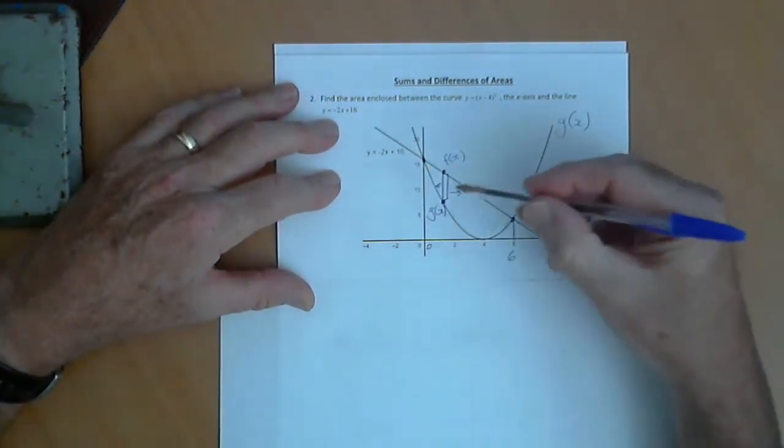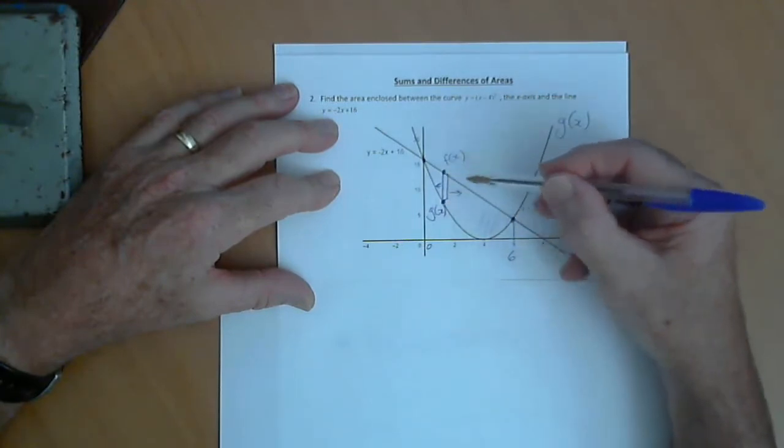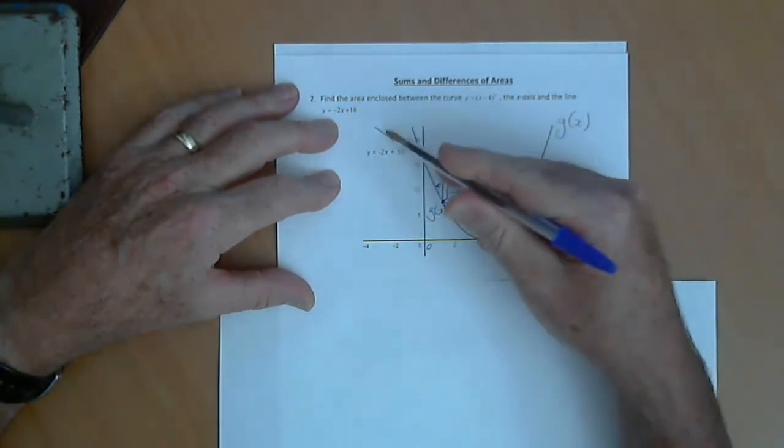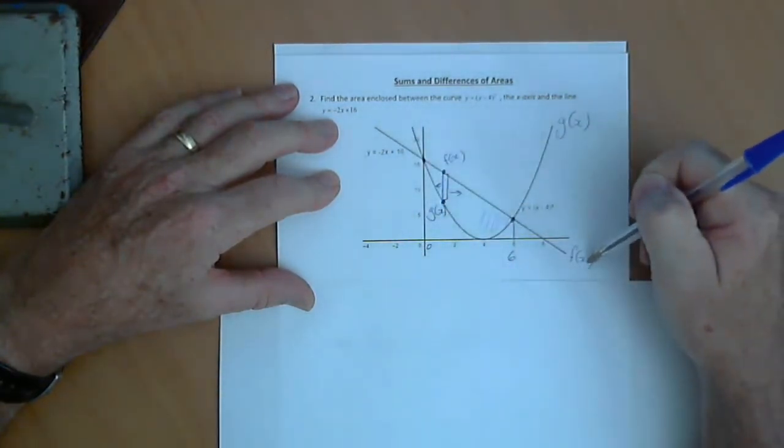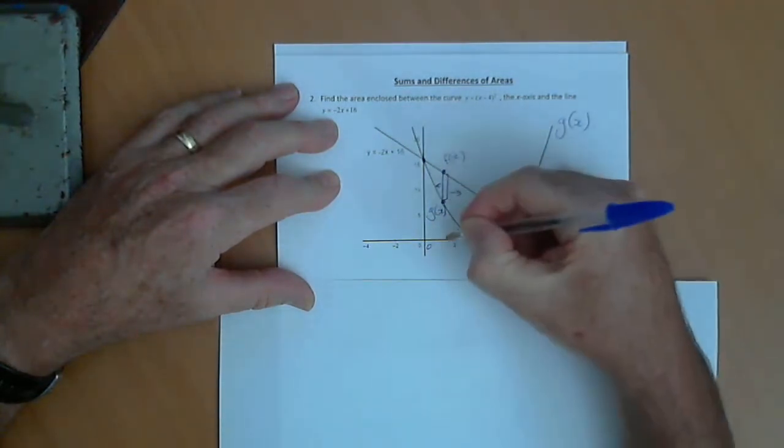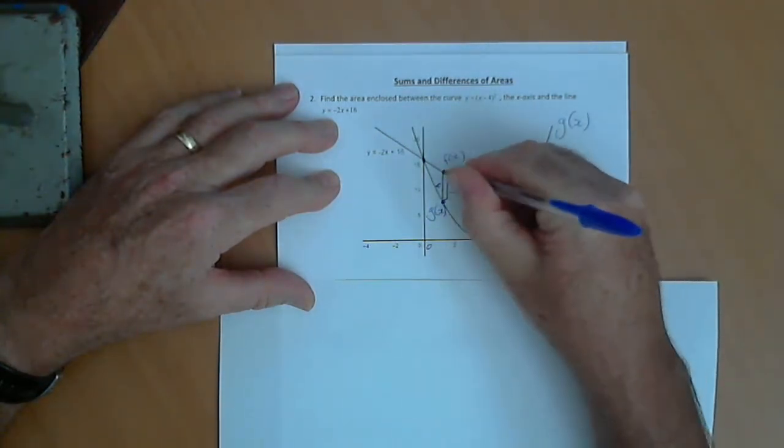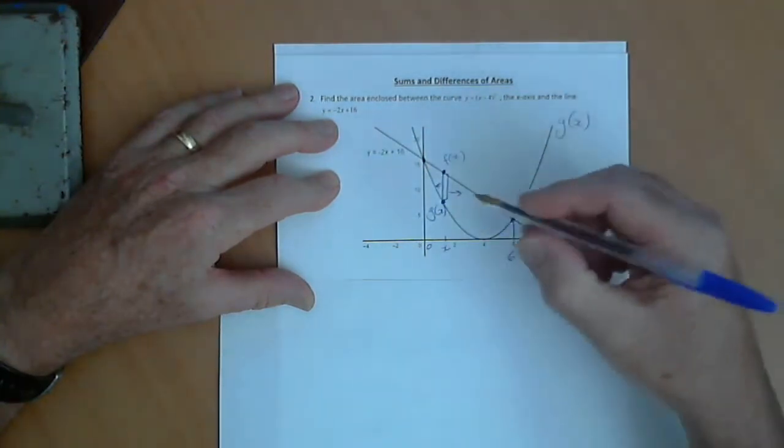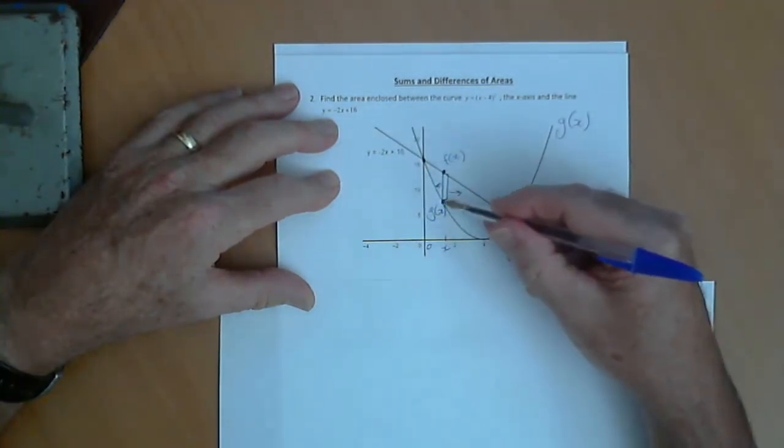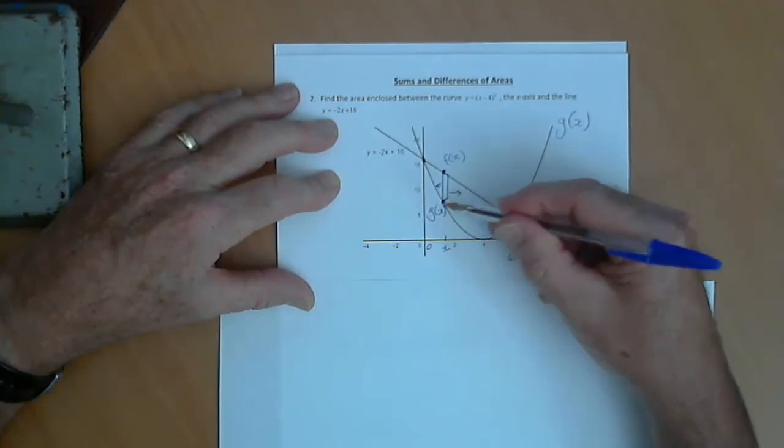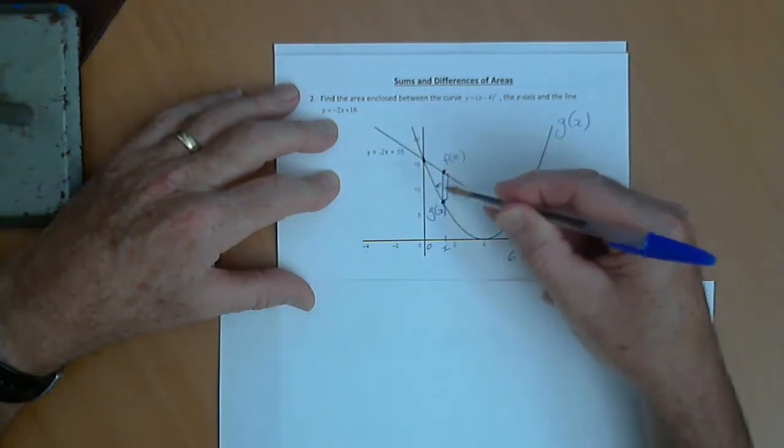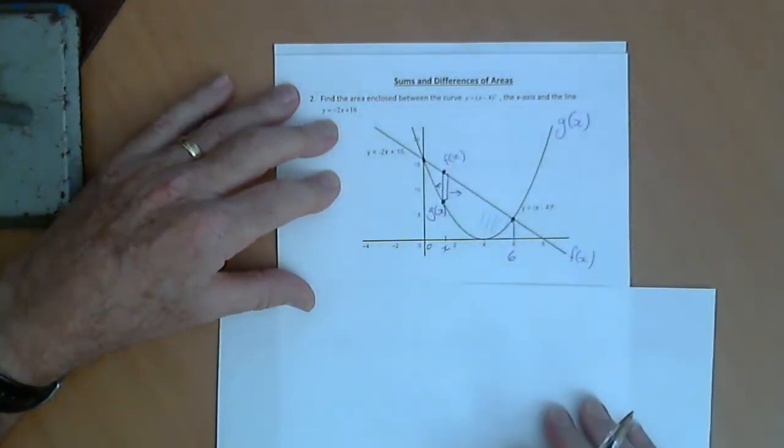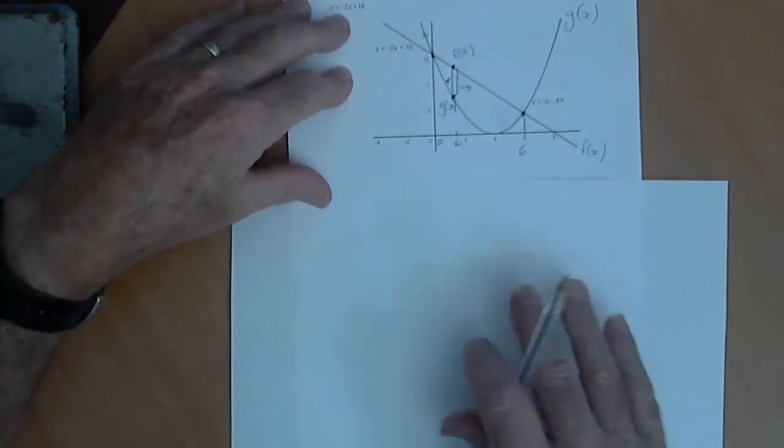So, how do we work out that value there? Well, our straight line, I've called that f of x. So, the height from the x-axis up to there is f of x at x. The height up to the parabola, which we've called g, will be g of x. So, the length of that strip will be the value of f minus the value of g. So, we'll use that in our integration.